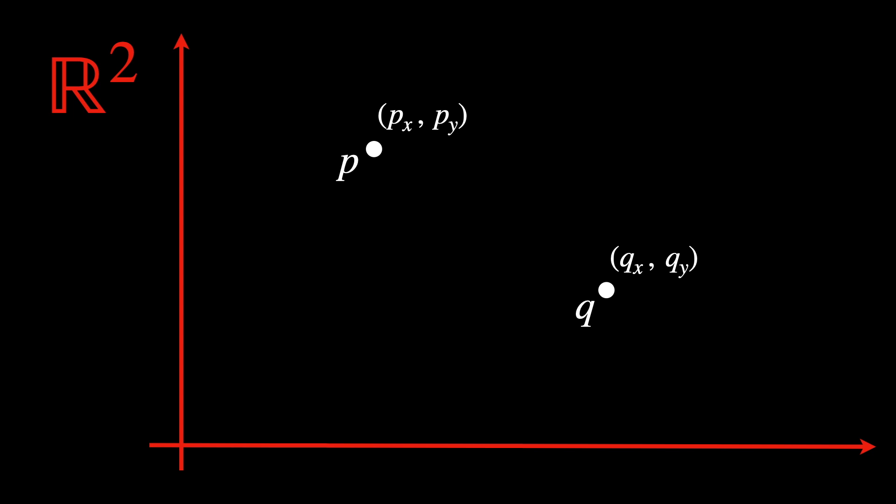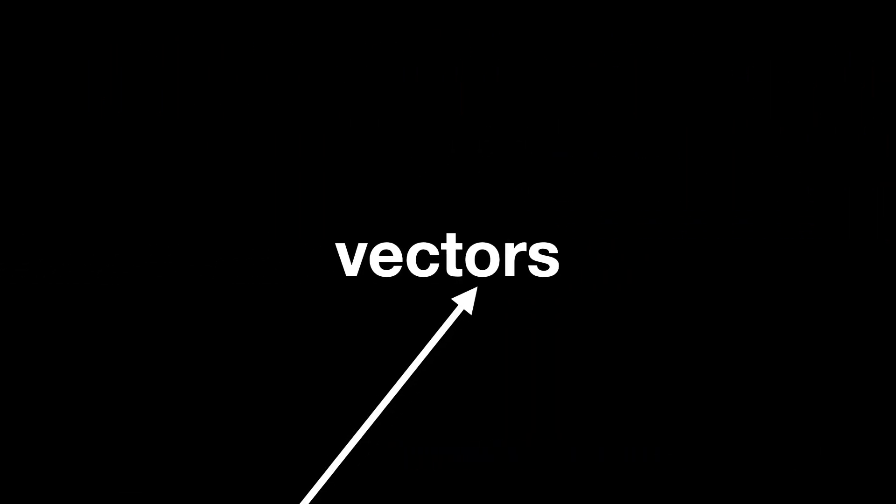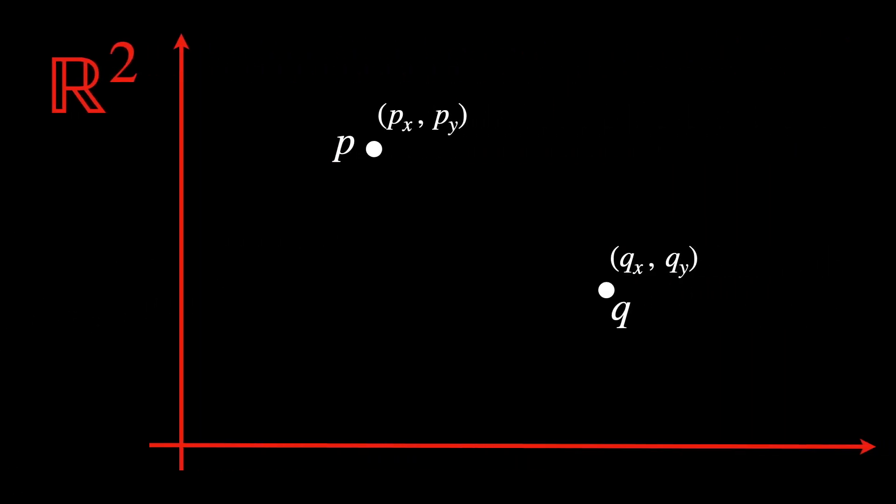Now, how in the world will we be able to mathematically describe the line between them and its distance? Well, this is where vectors come in. In R², any point can be represented as a vector from the origin to that point. For instance, the point P with coordinates (Px, Py) is represented by the vector P, while (Qx, Qy) becomes the vector Q.